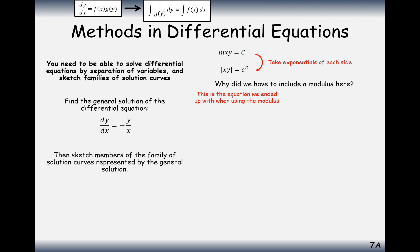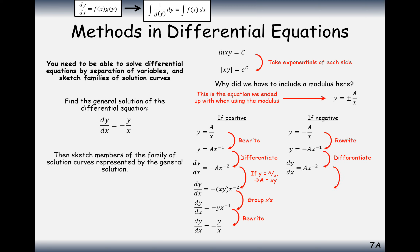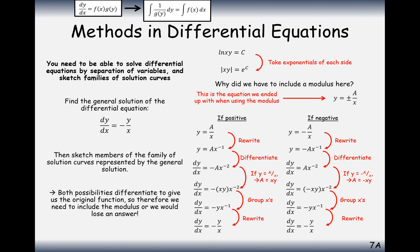Why did we have to include the modulus? The equation we ended up with was y equals plus or minus A over x. If A is positive, rewriting and differentiating gives the expression back. If A is negative, the negative disappears on differentiating but then comes back — so both possibilities differentiate to give the original function. Therefore we need to include the modulus or we could lose an answer.